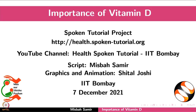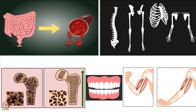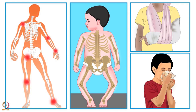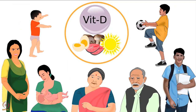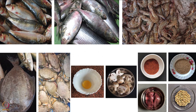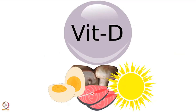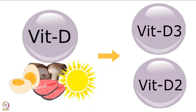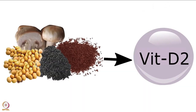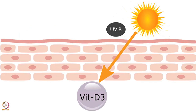Welcome to the spoken tutorial about the importance of vitamin D. In this tutorial we will learn about the role of vitamin D in the body, symptoms of its deficiency, recommended intake, and food sources. Vitamin D is a fat-soluble vitamin that exists in two forms: vitamin D3 and vitamin D2. D3 is mainly produced by the skin on exposure to UVB rays from sunlight.